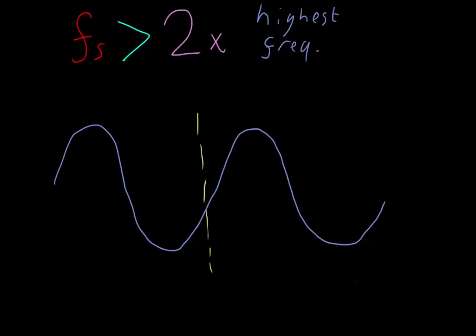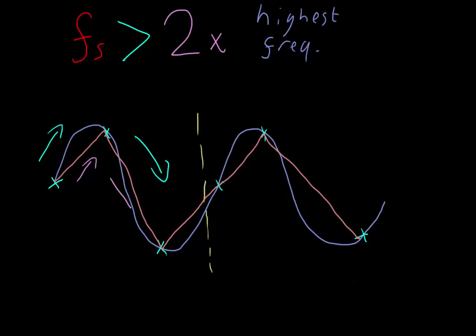So now let's think about what would happen if we sampled three times per period, or three times the frequency. So we sample here, we sample here, and we sample here, and then again on this period. Now we interpolate between these signals, or these samples, and we get something that looks like this. So now here, signals moving up, our sample's moving up, signals moving down, our sample's moving down. So now we have a reliable reconstruction of this signal.